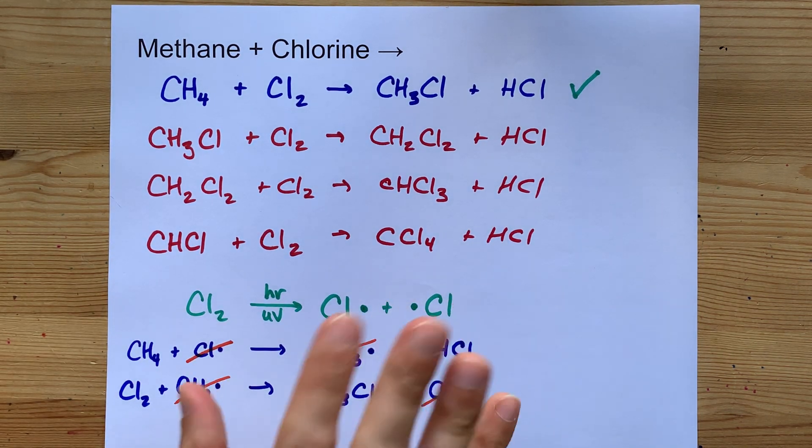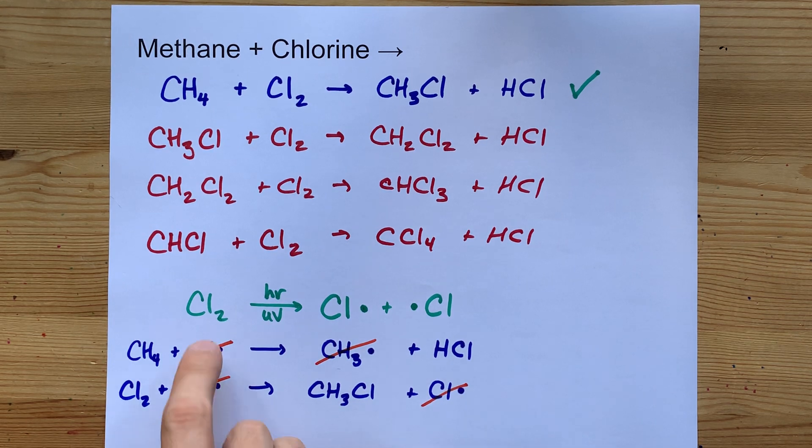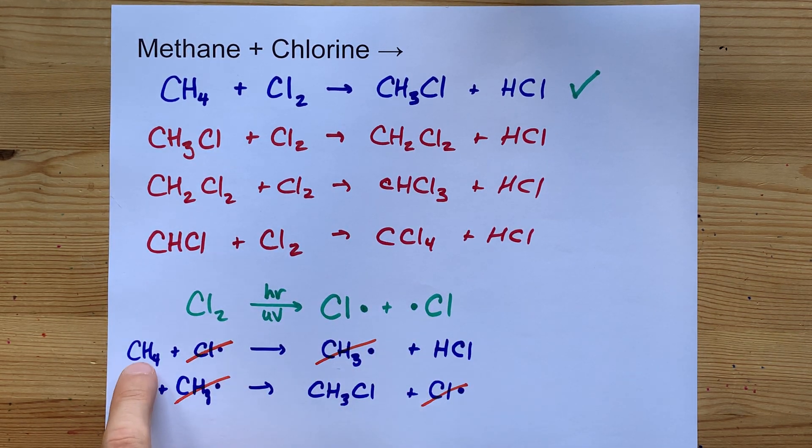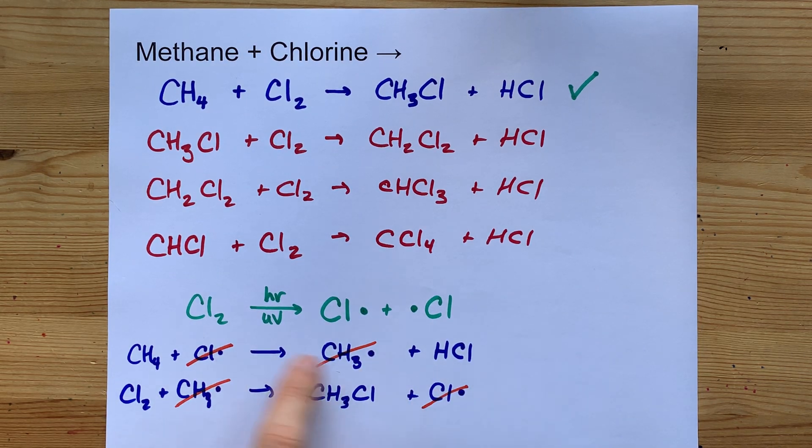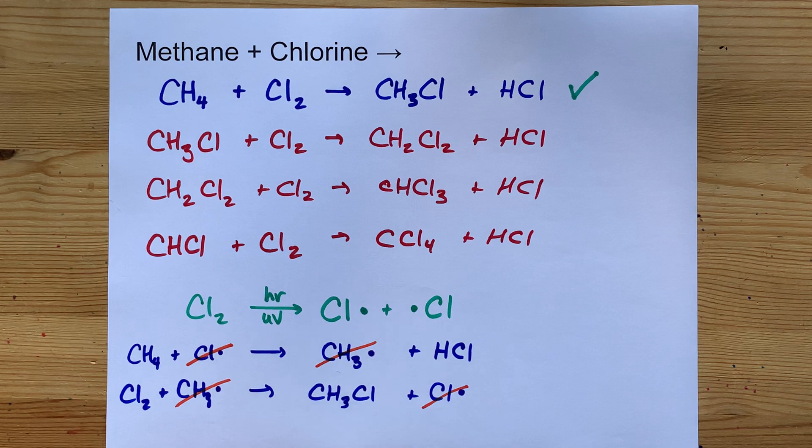But it was much more complicated than that because you needed to break a chlorine up into two radicals. That radical caused the methane to break apart. It caused the formation of methyl chloride and reformed the chlorine radical. So that chlorine radical was really just a catalyst here.